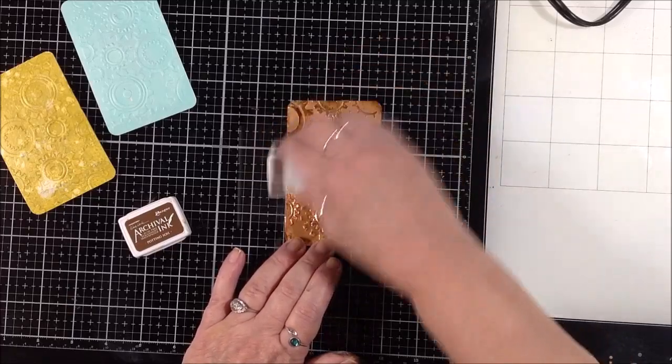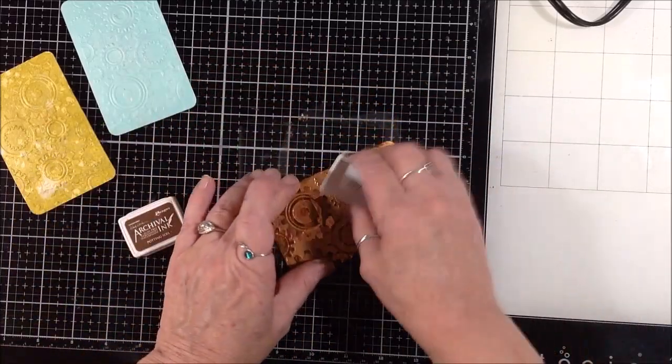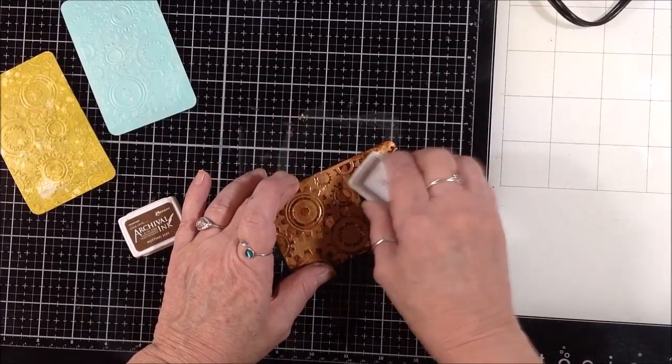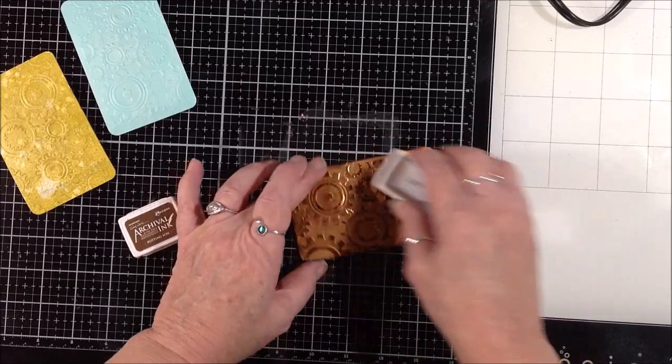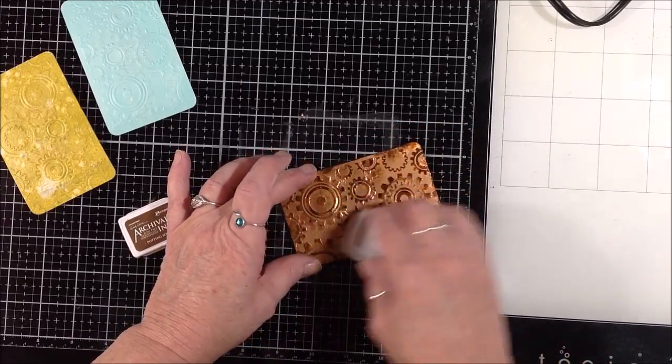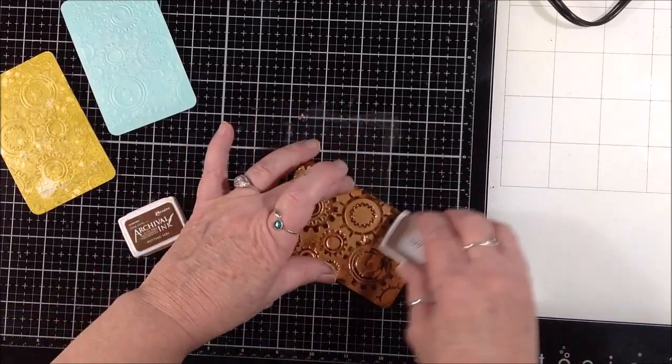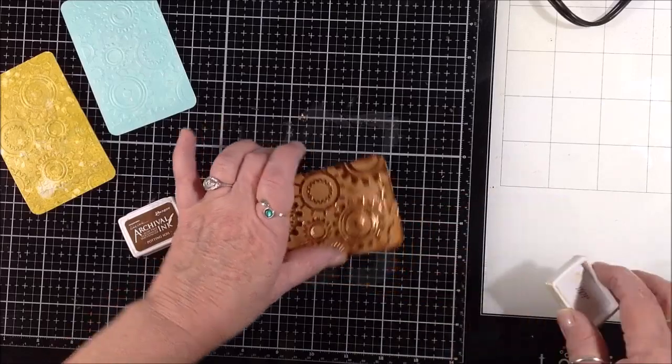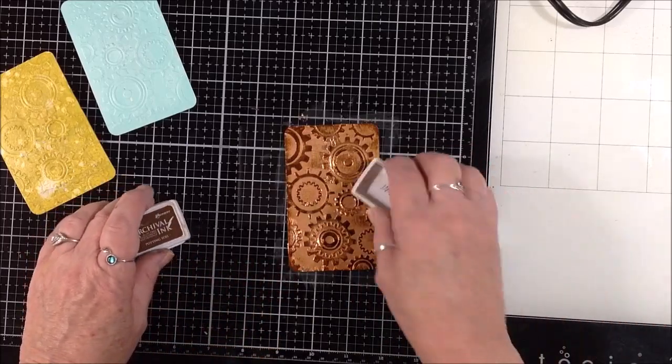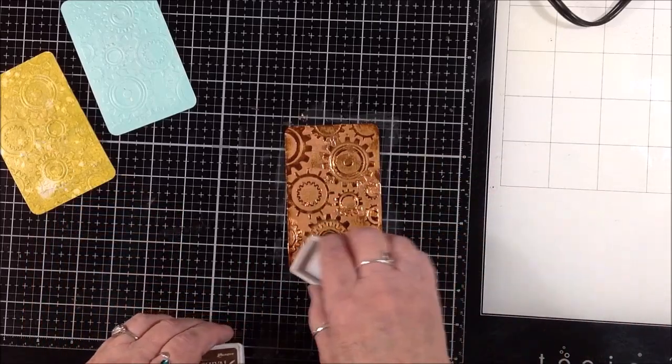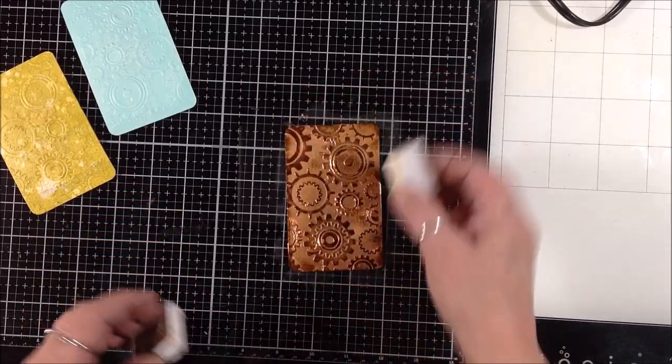Once I got all the gold foil on that I could get to stick, I went back over the top of it again with that potting soil archival ink just to bring the texture up a little bit more. Where I hit the gold foil with the ink it turned a really even prettier, more coppery color. I really like the way this one turned out.